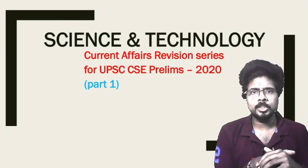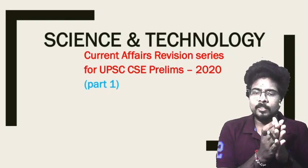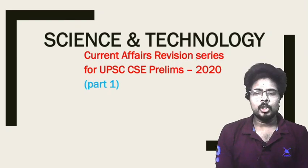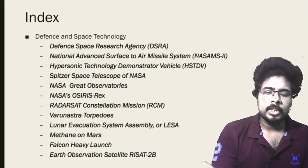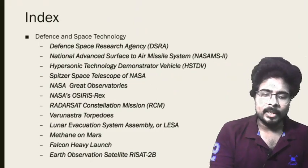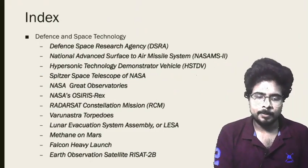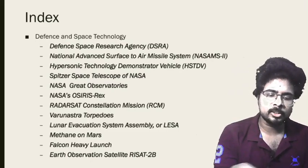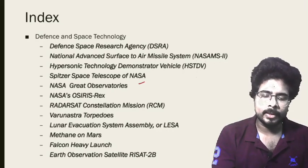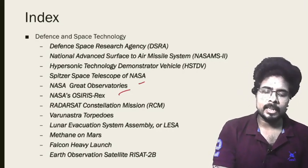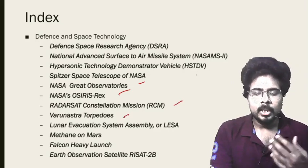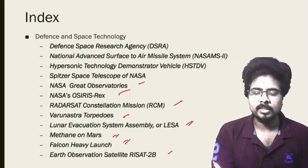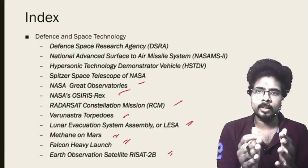Now we are starting with science and technology. In science and technology, we will be covering all the one and a half year current affairs in a sequence manner. This is part one of the lecture. In this lecture, we are going to cover defense and space related technologies, including the Defense Space Research Agency, national advanced surface-to-air missiles, hypersonic technology demonstrators, the Spitzer Space Telescope, NASA Great Observatories, NASA OSIRIS-REx, Radarsat Constellation Mission, Varunastra torpedoes, Lunar Evacuation System Assembly, methane on Mars, Falcon Heavy launch, and Earth Observation Satellite RISAT-2B.